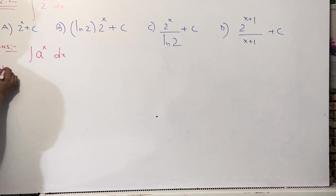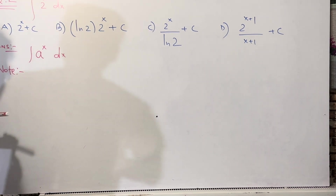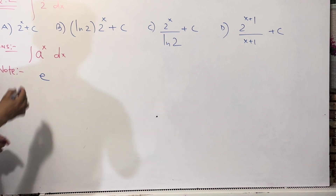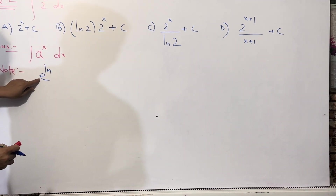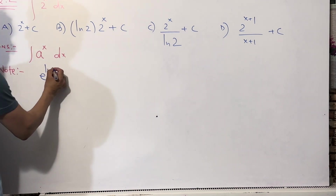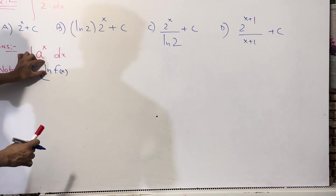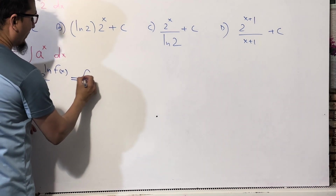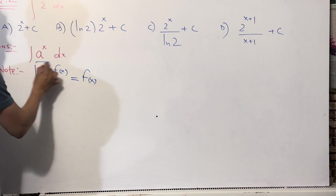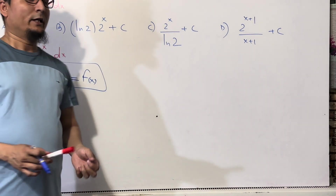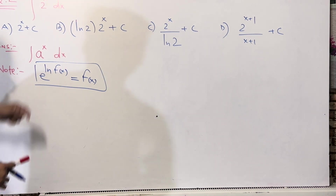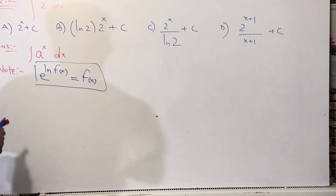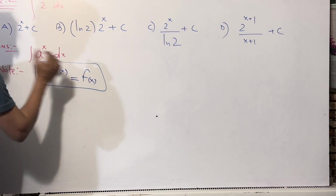For example, if you have e^(ln(f(x))), this is always equal to f(x) — the e and ln cancel each other. This is the formula you need to know. Here e is the exponential function and ln is the logarithmic function. Whenever you see e and ln together, they cancel, and the answer is just f(x).